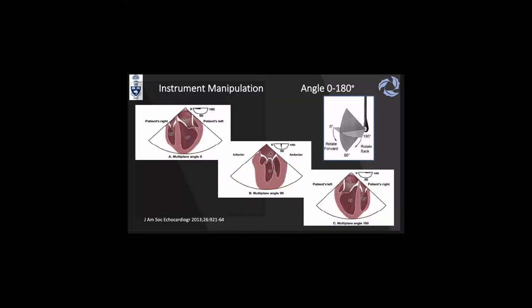When we rotate the angle: starting at 0 degrees, you are cutting the heart in half showing the four-chamber view, where on the right side of the screen is the left ventricle and on the left side is the right ventricle. At 90 degrees, if focusing on the LV, the right side of the screen is the anterior part and the left side is inferior. At 180 degrees, you obtain a flipped image of your four-chamber view.